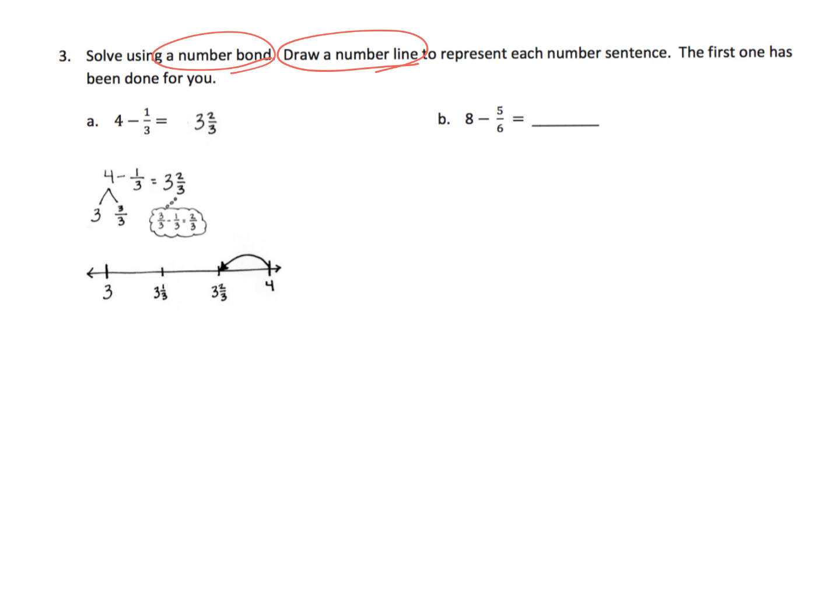So parents and teachers, let your students decide. Do they want to do the number bond first or do they want to do the number line first? It doesn't matter. So anyway, I will follow Eureka Math's lead over here and I will take that 8 minus 5 sixths and I will decompose 8 to be 7 wholes and 6 sixths.